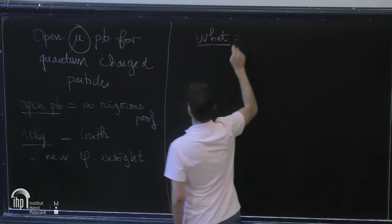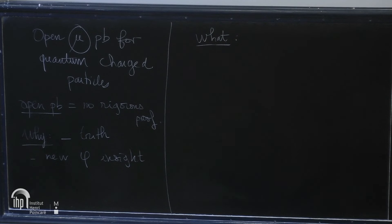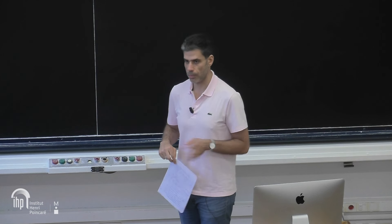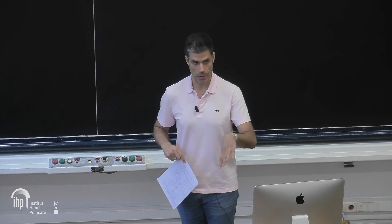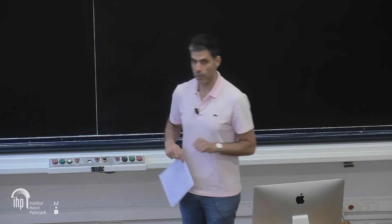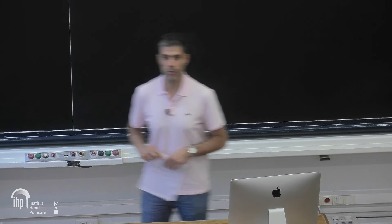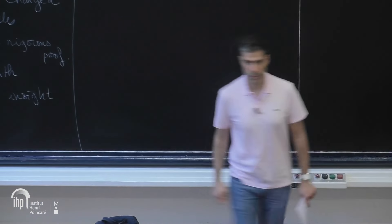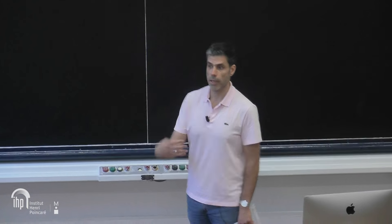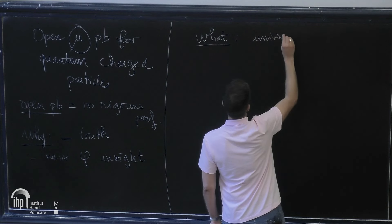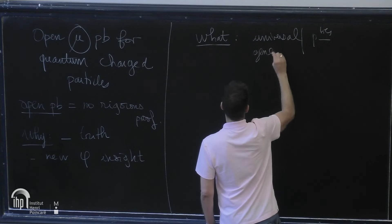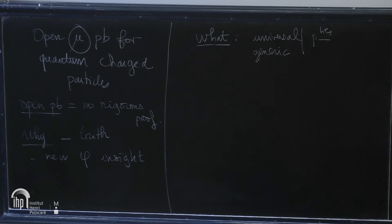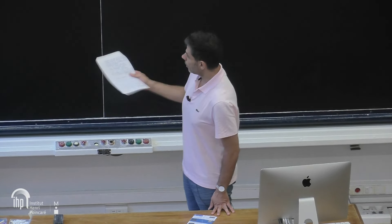Mathematically, it's extremely hard — and probably not doable — to prove extremely precise results on specific models. Mathematics is not appropriate for explaining why two specific molecules behave differently. The kind of properties we look at mathematically are usually universal and generic properties. The idea is to explain some physical phenomenon with a very broad perspective, and these are the kinds of open problems I will describe today for charged particles.